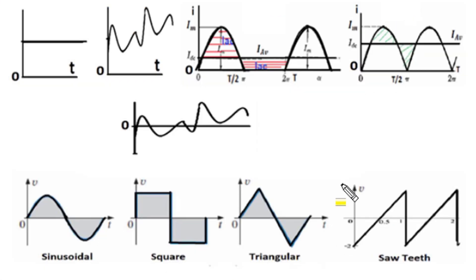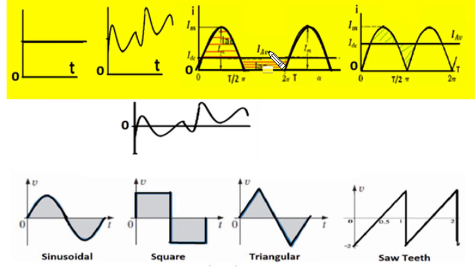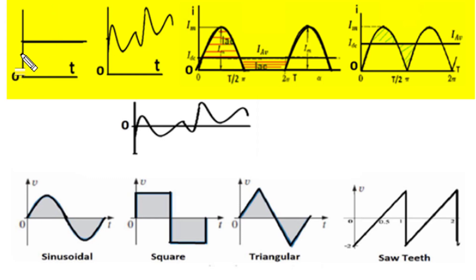Here on your screen we have displayed various waveforms of electrical signals in the form of current or voltage. In this first row, all four signals are known as DC signals, whereas the remaining waveforms shown here are alternating in nature. The basic difference between DC and AC is that in DC the direction of current or polarity of voltage remains in one direction, whereas in AC signals the direction of current flow or polarity of voltage changes its direction.